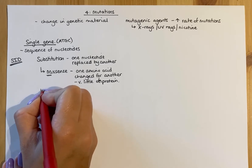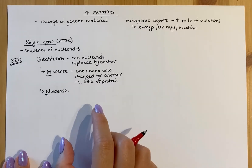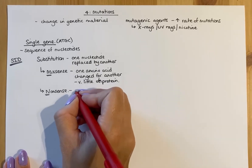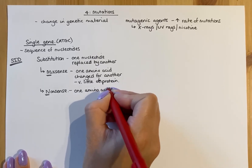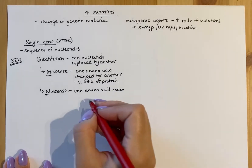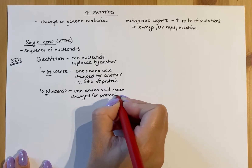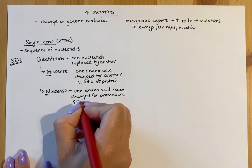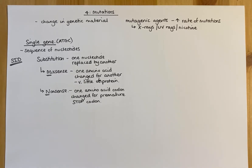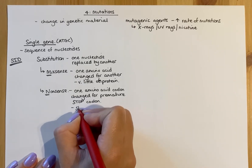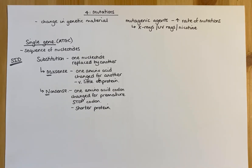The next substitution type is nonsense, where one nucleotide is replaced by another, but this changes an amino acid codon into a premature stop codon. It's premature because it occurs much earlier in the chain than it should, making the resulting protein much shorter. Because it's far shorter than normal, it doesn't function correctly, which can be really dangerous and damaging.